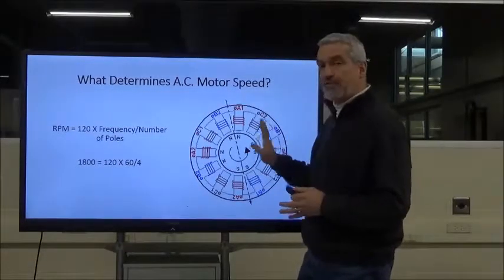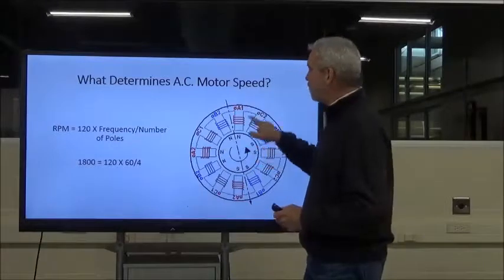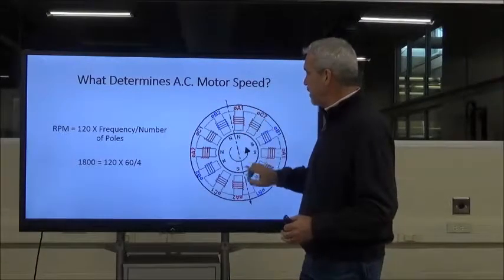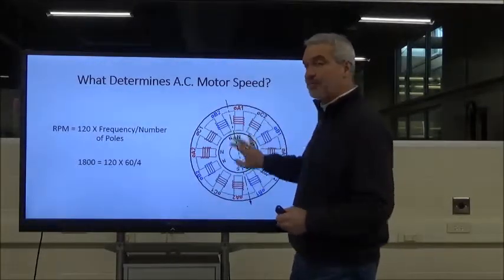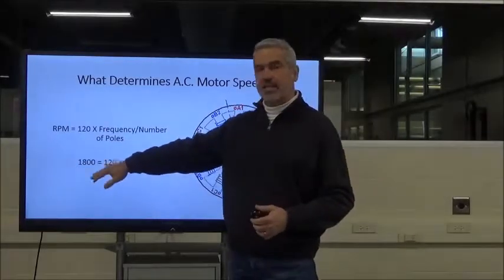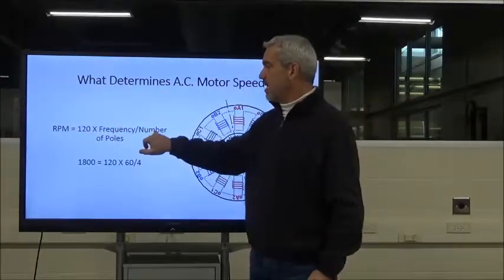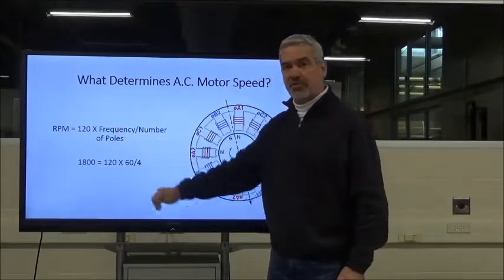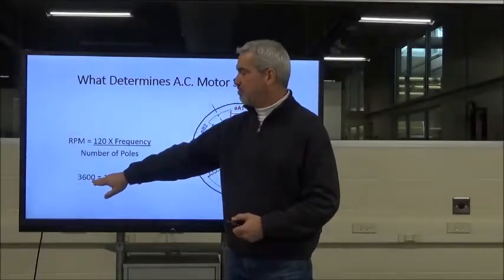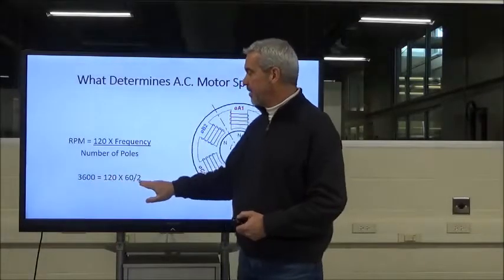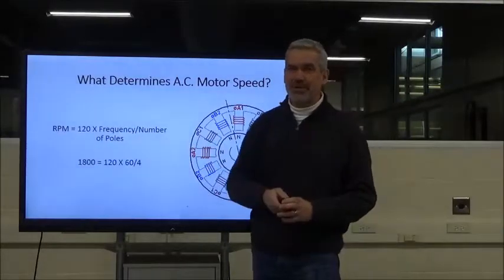With a four-pole motor, using the same formula: 120 × 60 ÷ 4 = 1,800 RPM. Notice that we doubled the number of poles and cut the RPM in half. Going from two poles to four poles drops us from 3,600 to 1,800 RPM. Pay attention to this relationship because you may see it on a quiz.